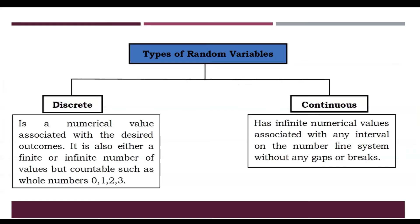There are two types of random variables: the discrete and continuous random variable. The discrete random variable is a numerical value associated with the desired outcome. It is either a finite or infinite number of values, but countable, such as whole numbers 0, 1, 2, and 3. The continuous random variable has infinite numerical values associated with any interval on the number line system without any gaps or breaks. To make it simple, discrete random variables are countable, and continuous random variables are measurable.